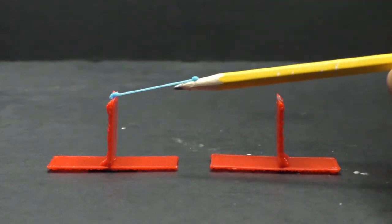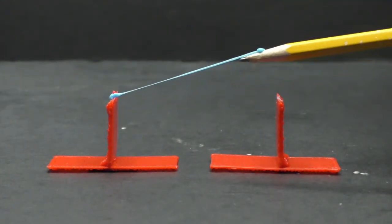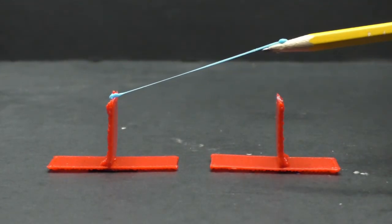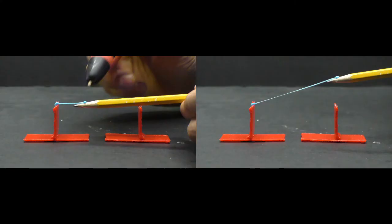One thing that 3D pen users, myself included, often forget is that hot plastic that has just been extruded can stretch a ton. And a lot of bridging is just controlling that stretching.